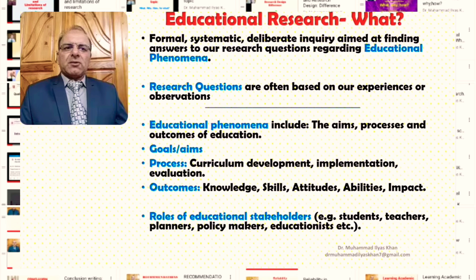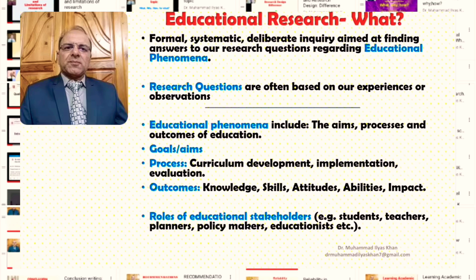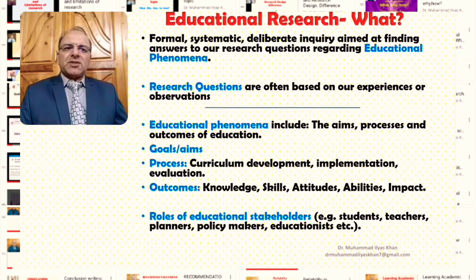All of these — the process of curriculum development, implementation, and evaluation — are one of the areas of interest for educational research. Similarly, educational research also has its scope revolving around the outcomes of the educational process. These outcomes are often in the form of knowledge that students gain, skills, certain attitudes and abilities, and the overall impact of the process of education.